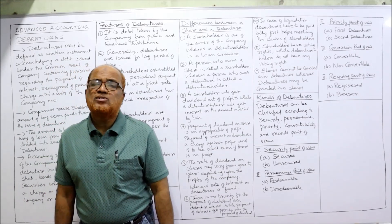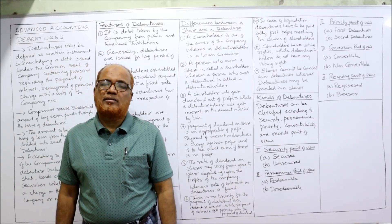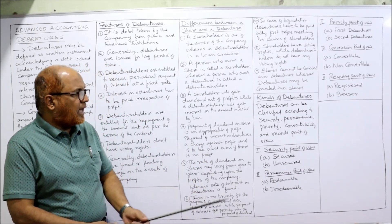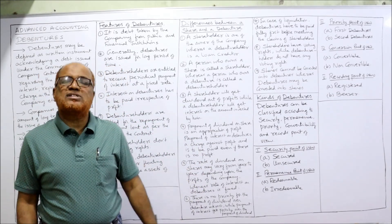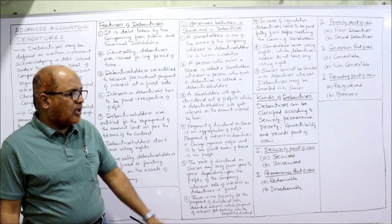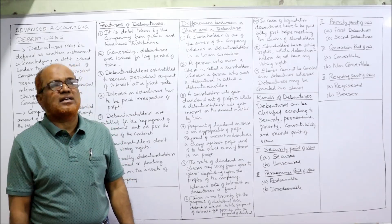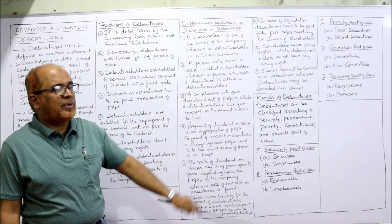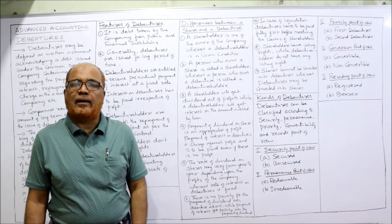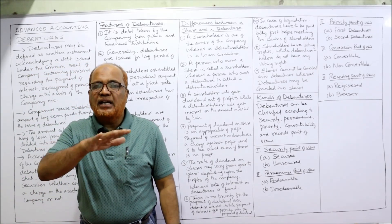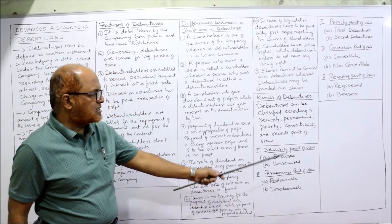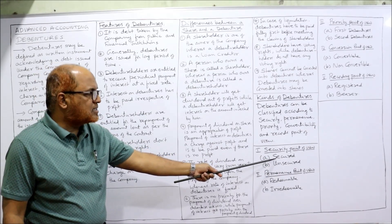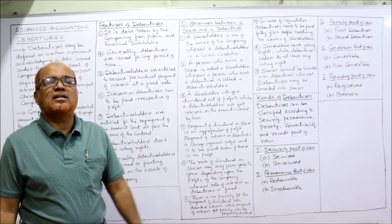The last topic in this video is kinds of debentures. Debentures can be classified on different bases: security, permanence, priority, conversion, and recording. On the basis of security, debentures are secured and unsecured. Secured debentures mean the debenture holder has a charge on the assets of the company if the company fails to repay or defaults on interest payment.